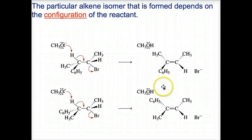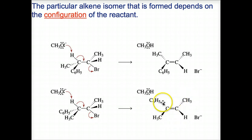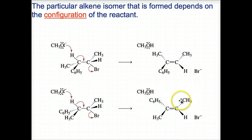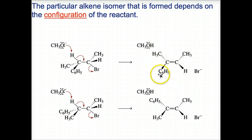Anti-elimination of HBr from 2S,3R-2-bromo-3-phenylbutane forms the Z isomer, where the bulky groups are on the same side — essentially cis — where this is a priority group and this is a priority group. With the E isomer, or trans, this right here is a priority group and this is a priority group. So we have anti-elimination of HBr shown in this slide.